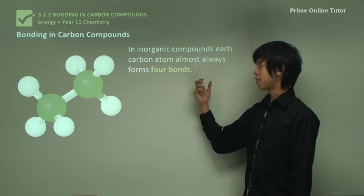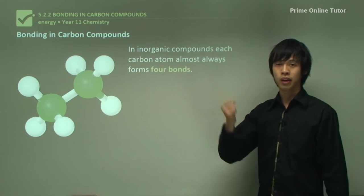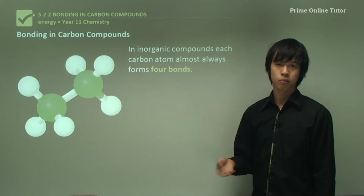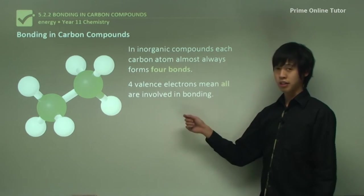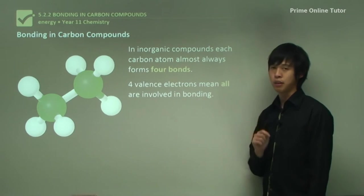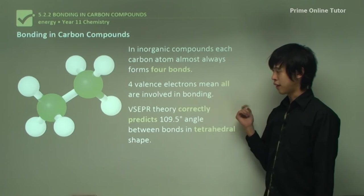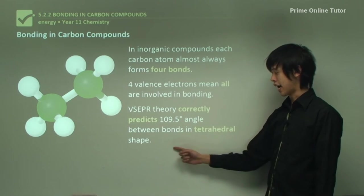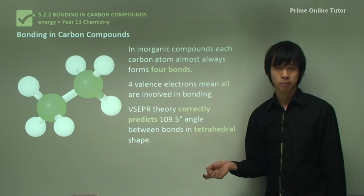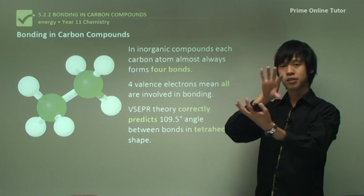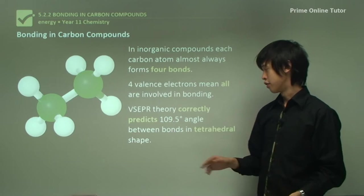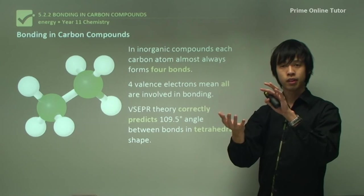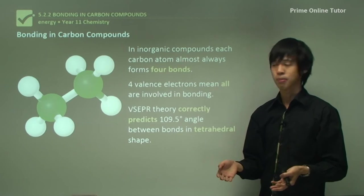In carbon compounds, each carbon atom always makes four bonds. Carbon is in group four, so it has four valence electrons, which means it can create up to four bonds — all are involved in bonding in some way. The valence shell electron repulsion (VSEPR) theory correctly predicts a 109.5-degree angle between bonds, forming a tetrahedral shape. This means the repulsion effects from each of the electrons is minimized.